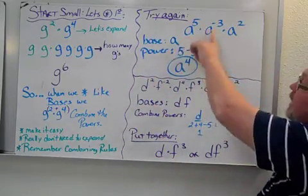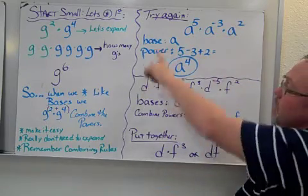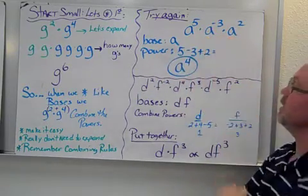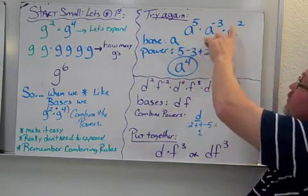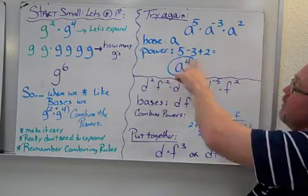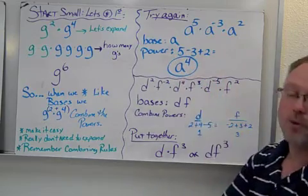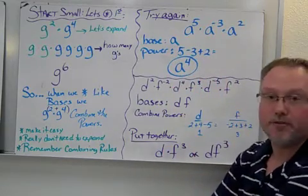So if we try this again and look at it a little bit different, we have a to the fifth, a to the negative three, and a squared. So our base, which is like, is a. Our powers is five, negative three, and two. Well, if I combine all of those, I end up with four. Put that with my base, it becomes a to the fourth.